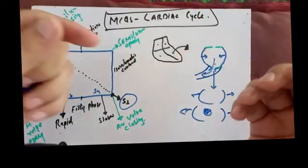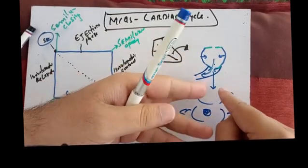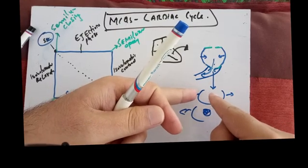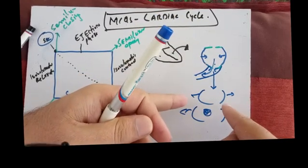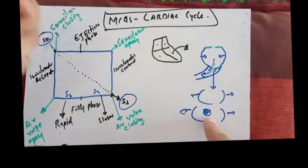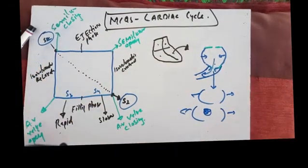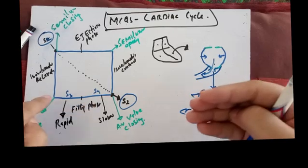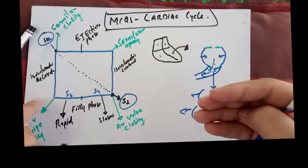When the ventricle dilates with blood volume constant, pressure drops. When pressure in the left ventricle drops, the mitral valve opens and diastole starts — blood enters the left ventricle. This is the filling phase, which consists of a rapid filling phase and a slow filling phase.